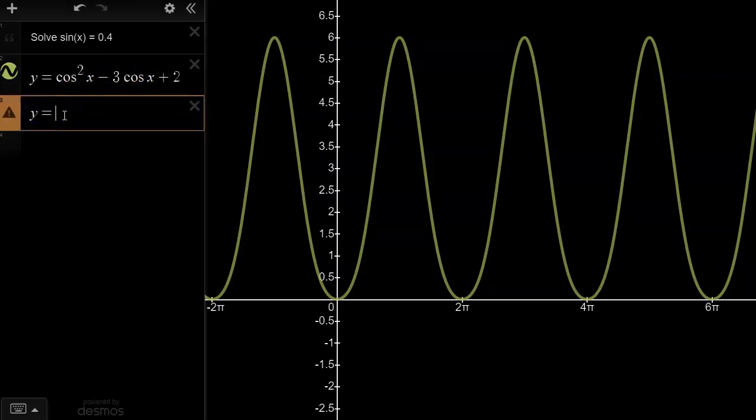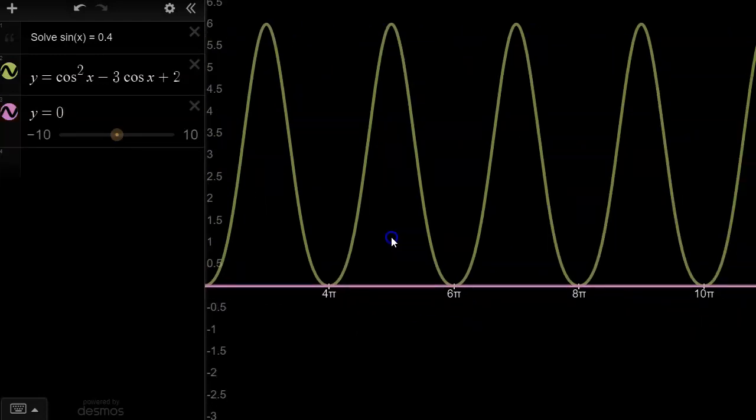Now, I guess I could type in y = 0. But y = 0 is essentially the x-axis, right? And so wherever the green graph or the sinusoidal function, the cosine function intersects with the pink function or y = 0, that's where we have a solution. Right? So there it is, 0, 2π, 4π, 6π, etc. Right? So all of these π's.